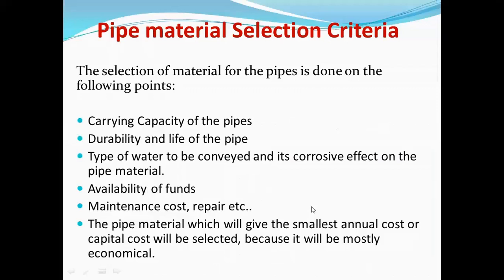The pipe material which will incur the smallest annual cost or capital cost should be selected — pipes that give the least annual recurring cost, because this will be most economical. In this way, these factors affect the pipe material selection, and as per our requirement we should go for the appropriate pipe material.